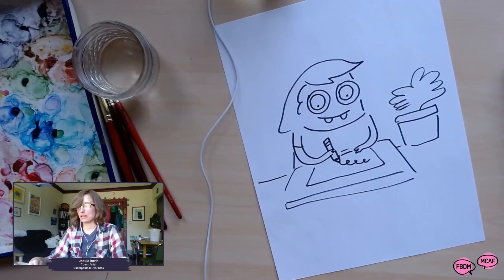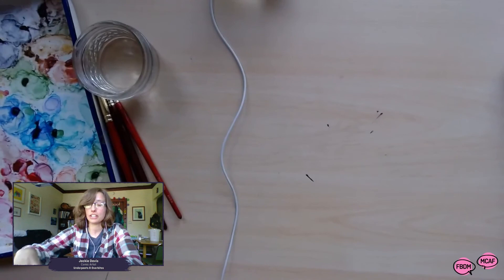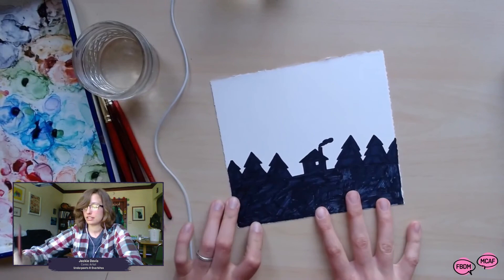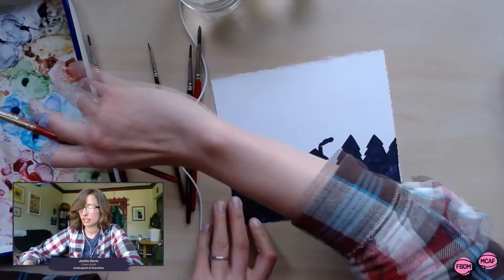I paint everything in watercolor and I wanted to show you how I paint a sunset. So first I'm gonna get all the paper wet, just the part that I'll be painting, and then I'm gonna apply some pigment.